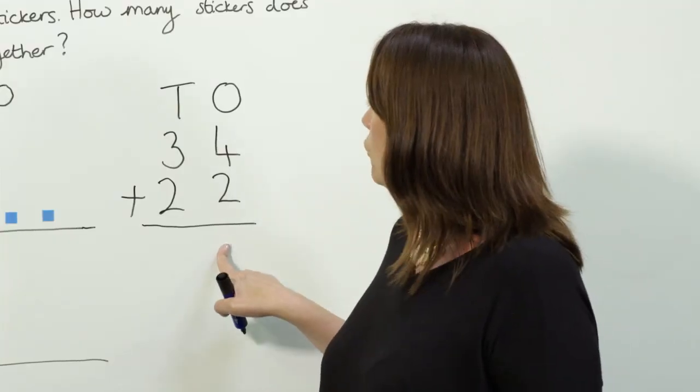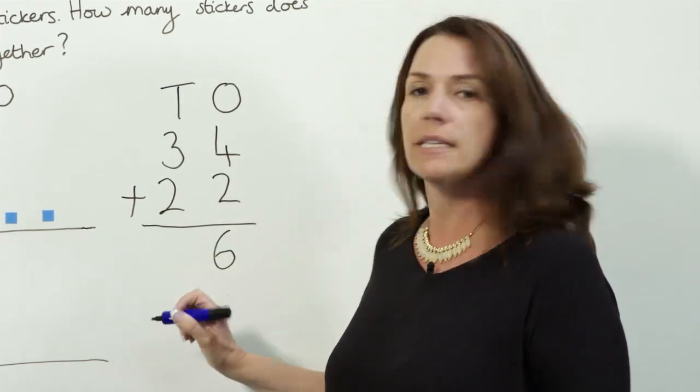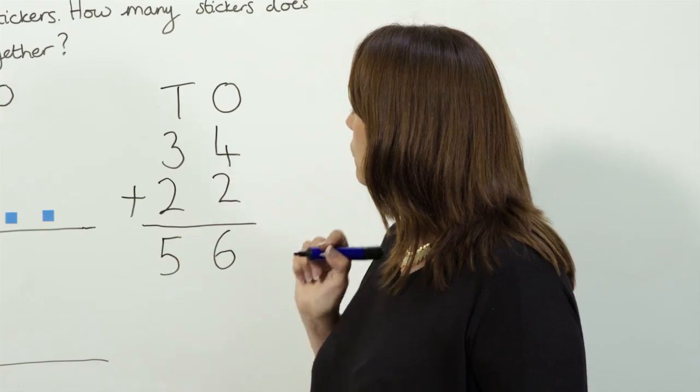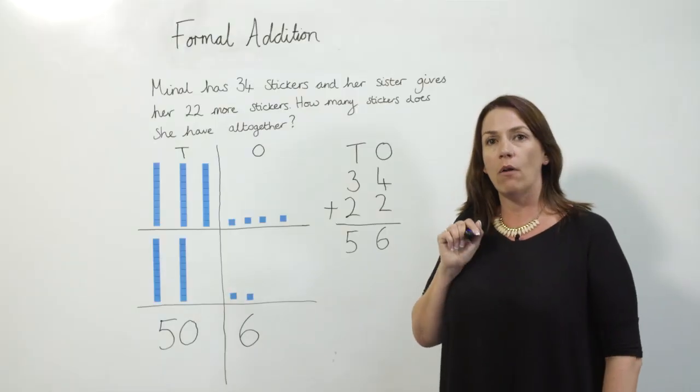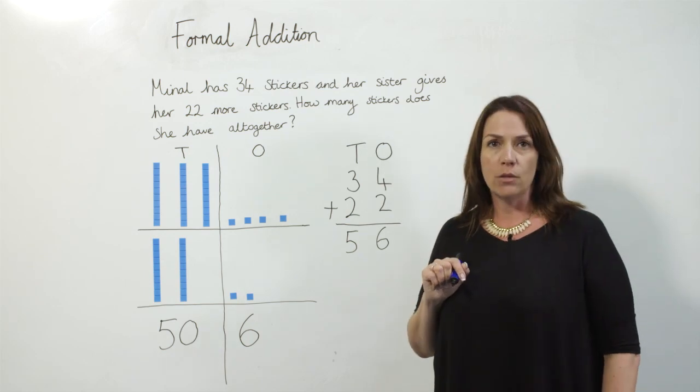We can move over to our formal method 4 add 2 is 6 and 30 add 20 is 50 which gives us the answer of 56 and we can return to our final question to say that Minel has 56 stickers all together.